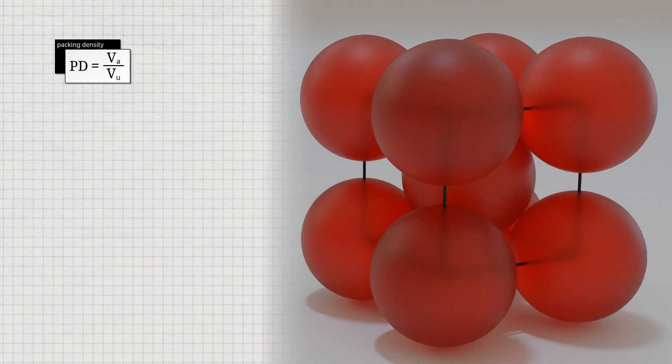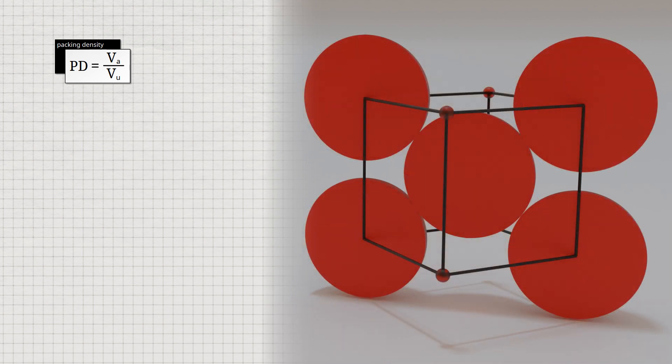To determine the packing density in the body-centered cubic lattice, we consider the space diagonal of the cube-shaped unit cell. The three atomic spheres located on this diagonal are just touching each other. For the sake of clarity, we reduce the size of the spheres in the foreground and show the spheres located on the space diagonal in section. We can now see immediately that the space diagonal C just corresponds to four times the atomic radius R.